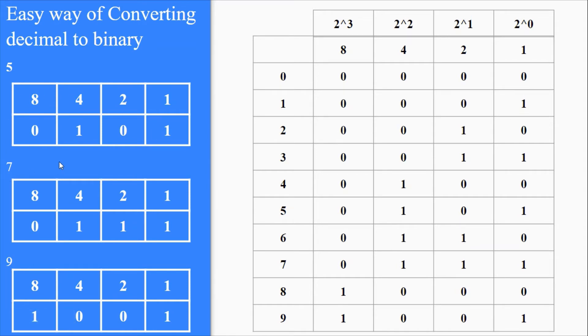Likewise for 7, try breaking down into powers of 2. It is 4 plus 2 plus 1. Under these place values put a 1, and the one which we are not using put a 0.